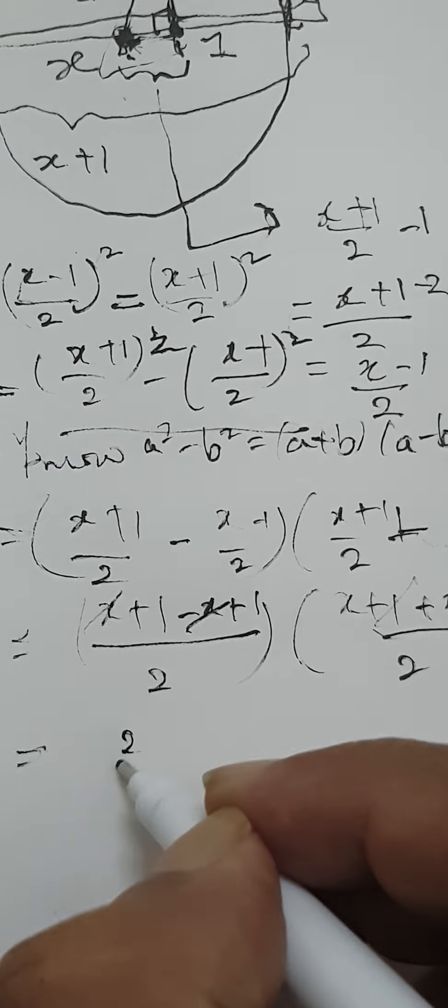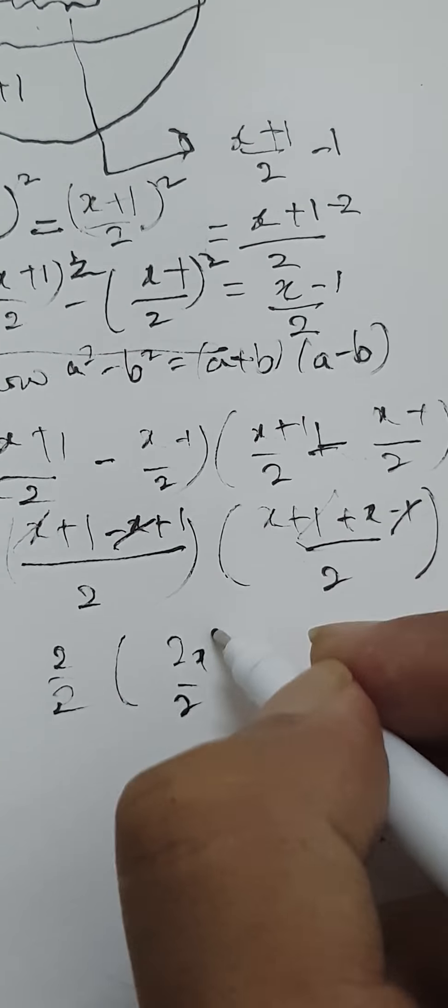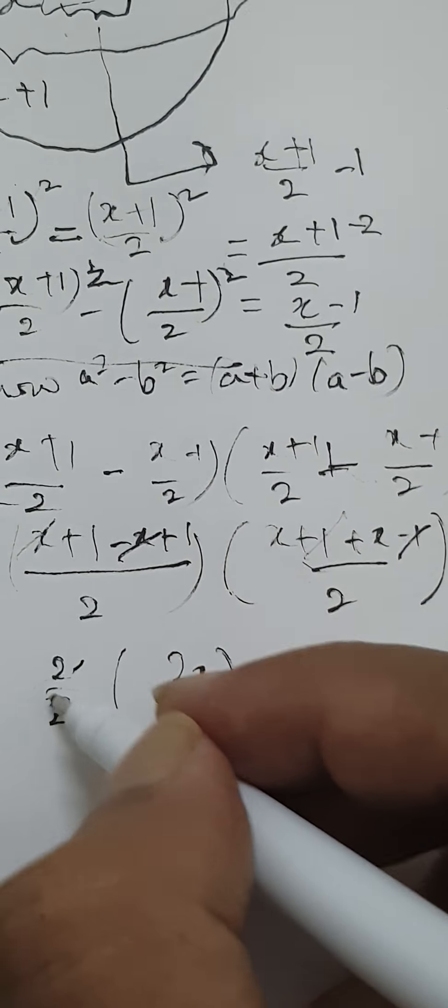So this is 2 by 2, that is 1. And here it is 2x by 2. So this is 2x by 2, which equals x.